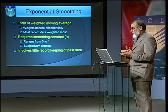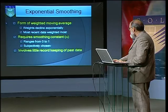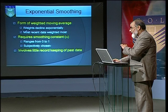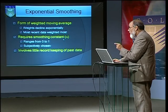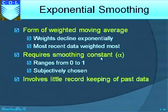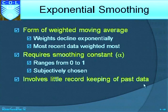Is there some method that will address these problems in forecasting? Yes — exponential smoothing helps decrease the variation. It is a form of weighted moving average where weights decline exponentially. Most recent data is weighted the most, and it requires a smoothing constant alpha ranging from 0 to 1, subjectively chosen based on experience. It involves little record keeping of past data. Now we'll see how exponential smoothing actually works.